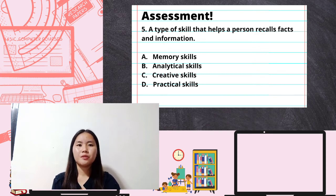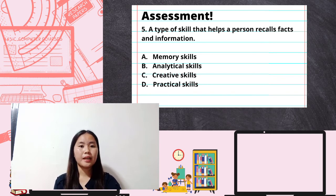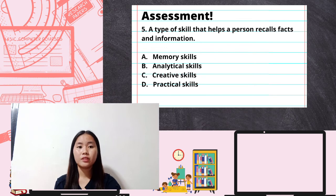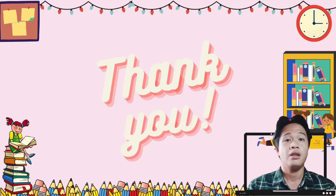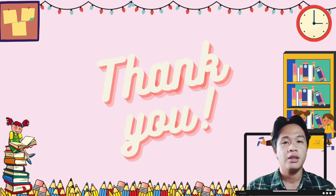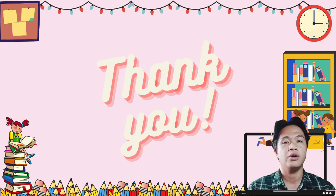For the last question: it is a type of skill that helps a person recall facts and information. Letter A: memory skills; Letter B: analytical skills; Letter C: creative skills; Letter D: practical skills. The correct answer is Letter A — memory skills. Thank you everyone for answering the assessment. I hope you have learned something and enjoyed our online discussion. Have a nice day, goodbye.